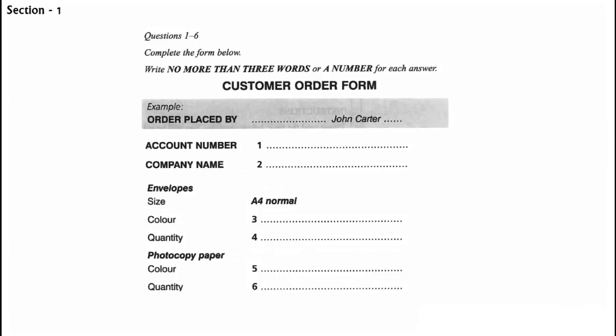And who am I speaking to? John Carter. Right. Can I just confirm your account number and the name of your company, John? Sure. The account number is 692411. 692411. Right. And you're from Rainbow Computers? No. The company is Rainbow Communications. Oh, OK. I'll just fix that on the system. Communications.